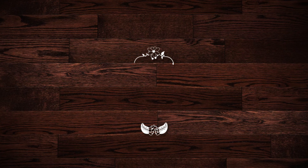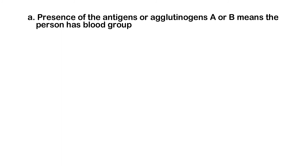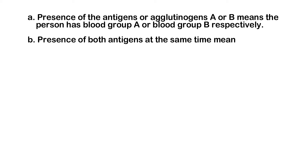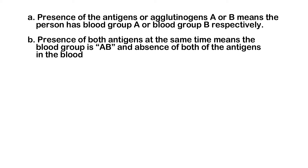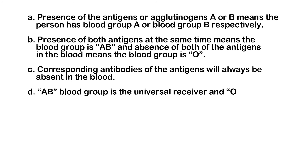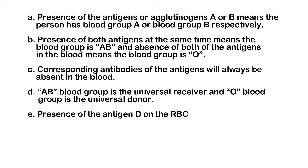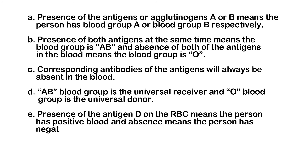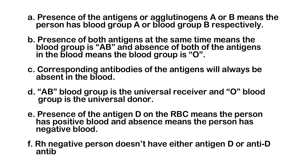From the discussions, we can now summarize with the following key points: Presence of agglutinogen A or B means the person has blood group A or B, respectively. Presence of both antigens means blood group AB, and absence of both means blood group O. Corresponding antibodies of the antigens will always be absent in the blood. AB blood group is the universal receiver and O blood group is the universal donor. Presence of antigen D on the RBC means the person has positive blood and absence means negative blood. An Rh negative person has neither antigen D nor NTD antibody.